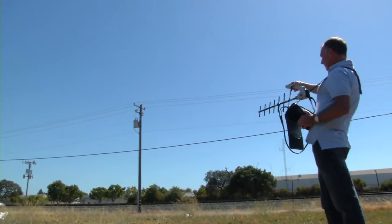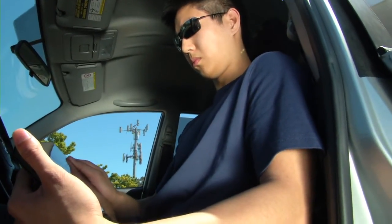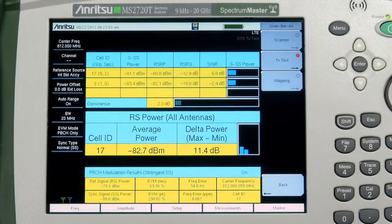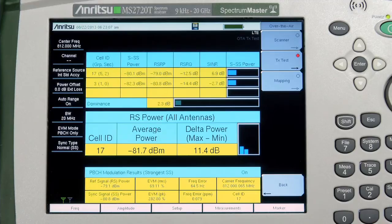Over the air modulation quality measurements combined with a throughput check with a UE will determine the health of the complete system from backhaul to antenna. The transmitter test screen can also be used to determine correct MIMO operation and to troubleshoot cross-sector connection problems.